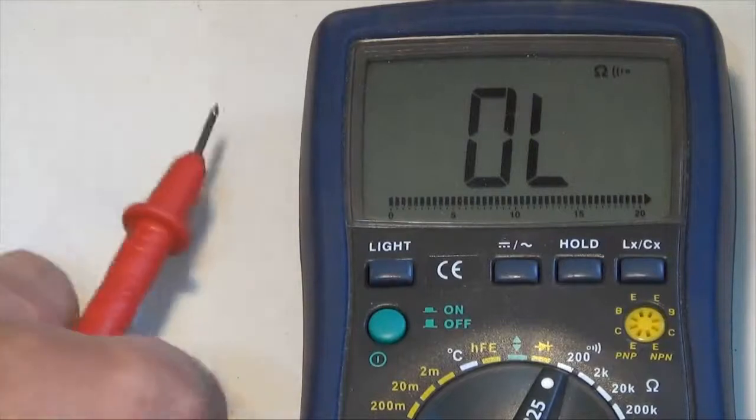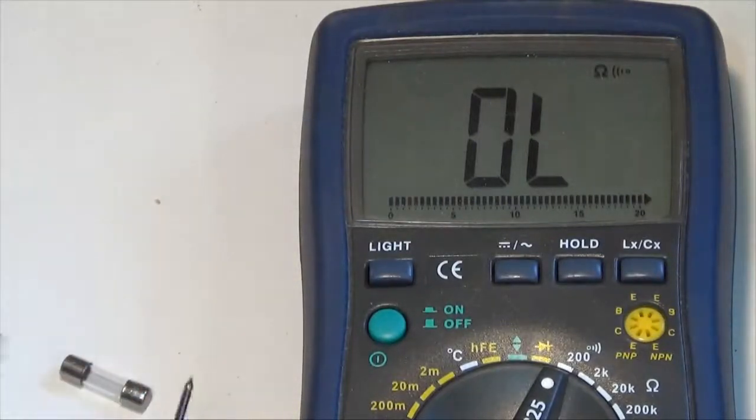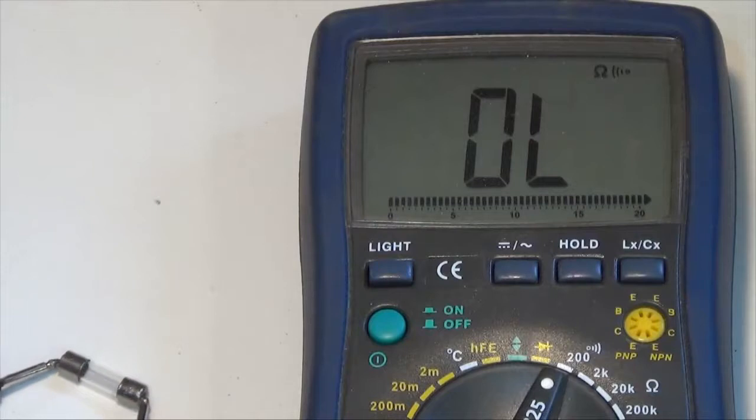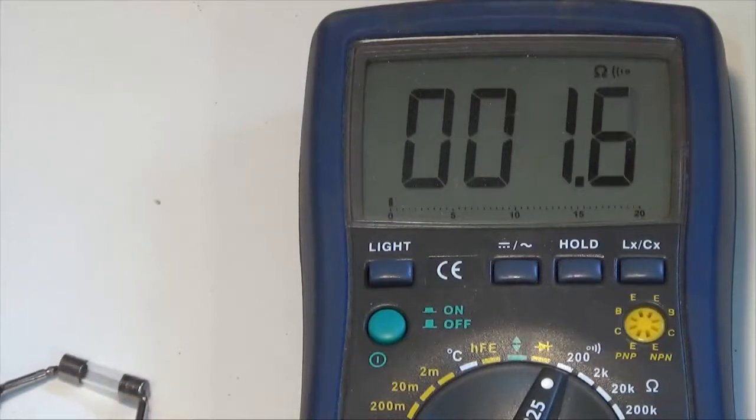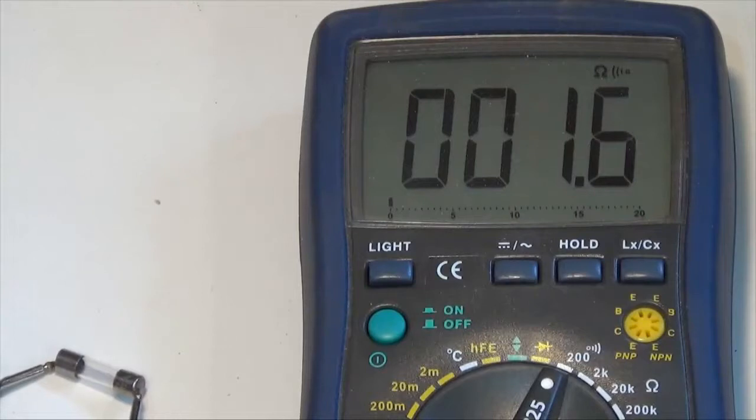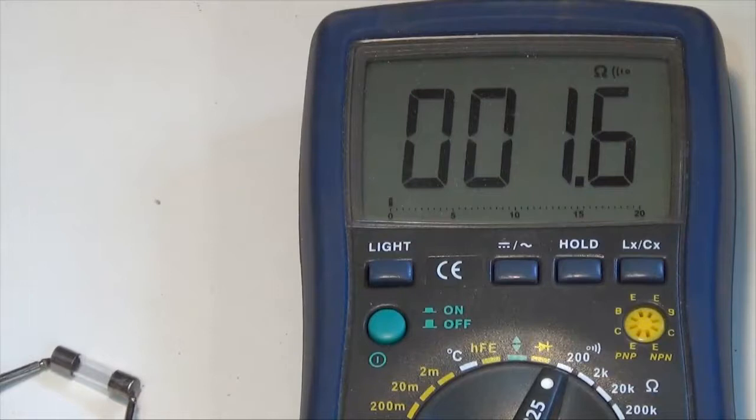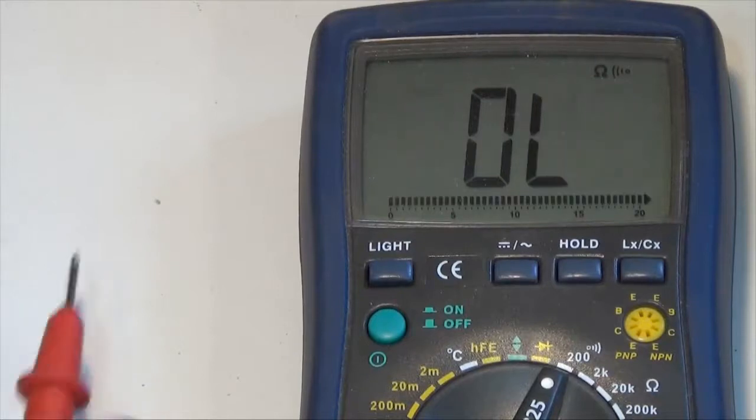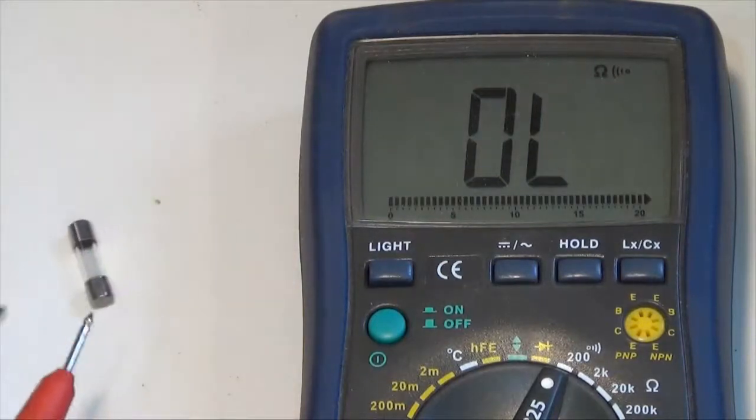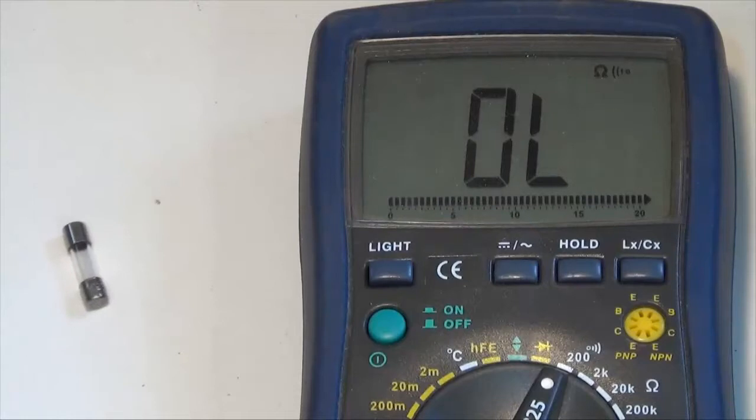So this is a fuse, a spare fuse that I have. I'm going to measure the resistance of it before I put it in. And you can see I'm measuring about 1.6 ohms here, 1.5 thereabouts. It's bouncing around. That's pretty close to zero ohms. So this is a good fuse. So I'm going to put this one in my multimeter. And I should be able to measure current again on the milliamp jack.